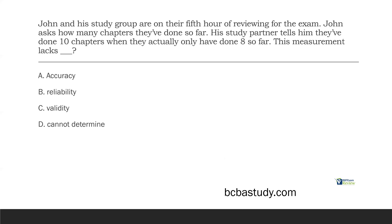Validity means we are measuring what we intend to measure. In this case, John's study partner is measuring the chapters — he's just doing it inaccurately. So our measurement is valid. We're not sure if it's reliable, but we know it's inaccurate. This measurement lacks accuracy. You have to attack these accuracy, reliability, and validity questions understanding that each one occurs in a bubble. You can be valid and accurate and not reliable, accurate and reliable but not valid, or reliable and valid but lack accuracy — it all depends on what information you're given.